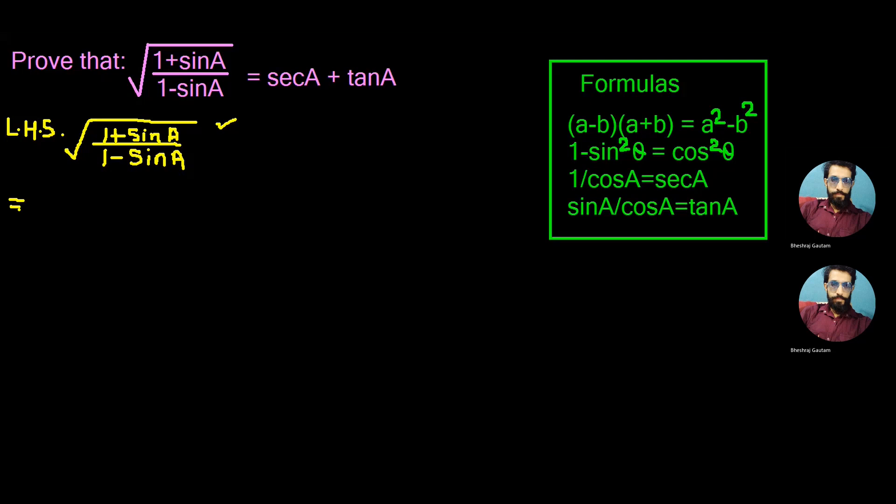Now first of all we rationalize the denominator in this case and write as one plus sin A by one minus sin A as it is. Rationalization means multiplying by one plus sin A on both numerator and denominator here.